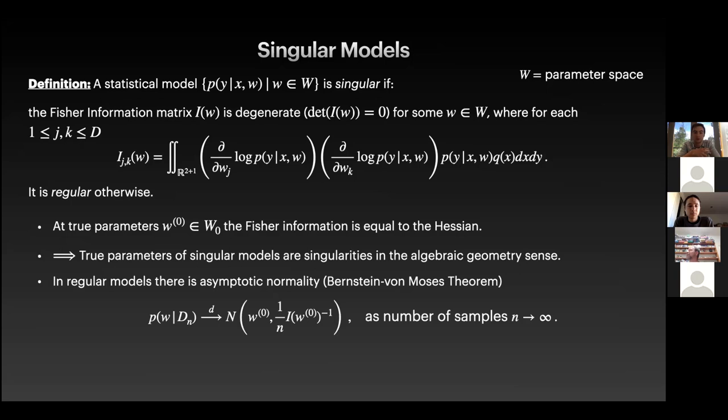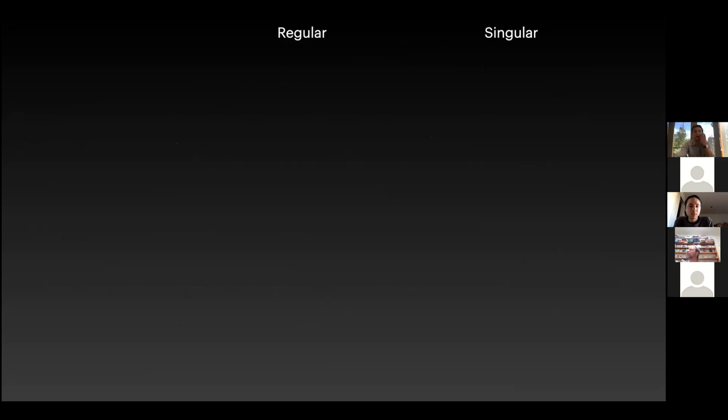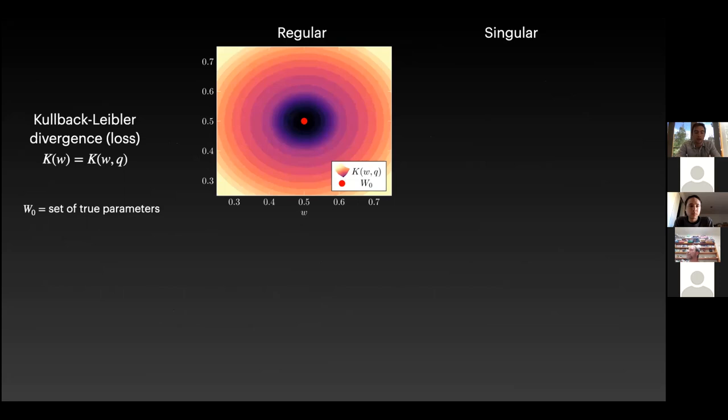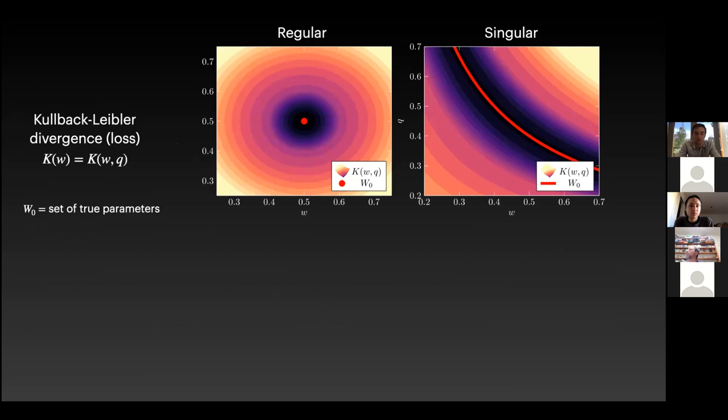The key difference between these models is that in singular models, at true parameters, the Fisher information is just equal to the Hessian of the Kullback-Leibler divergence. And this implies that true parameters of singular models are singularities in the algebraic geometry sense. And this is why Watanabe says that algebraic geometry lies at the heart of statistical learning. In regular models, one of the main results of Bayesian statistics is the Bernstein von Mises theorem, which says that the posterior approaches a normal distribution as the number of samples goes to infinity. But this fails in singular models because clearly the Fisher information matrix is non-invertible because it is degenerate.